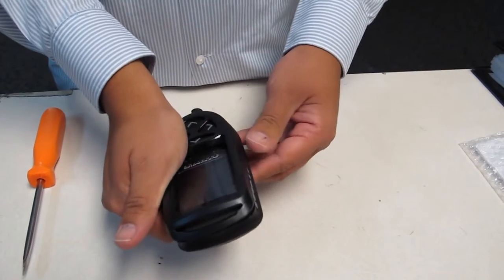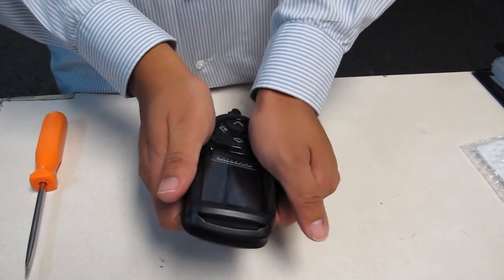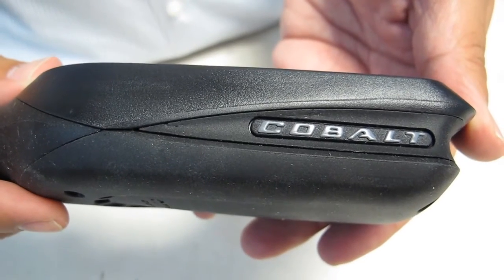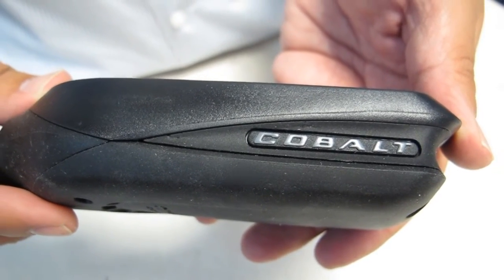With the side of the top cover engaged, snap the other side over the tabs on the case to lock into place. Make sure there are no gaps between the front cover and the body of the Cobalt.